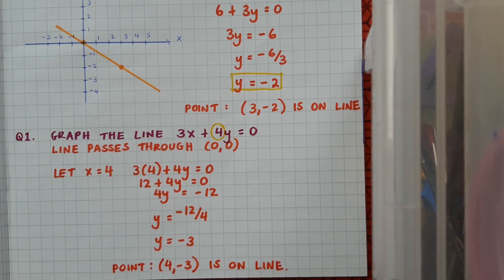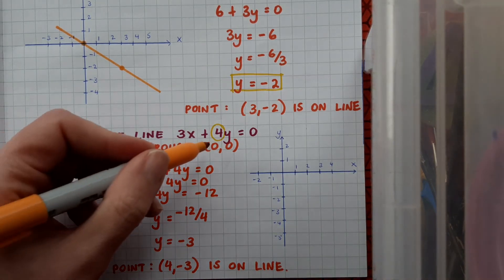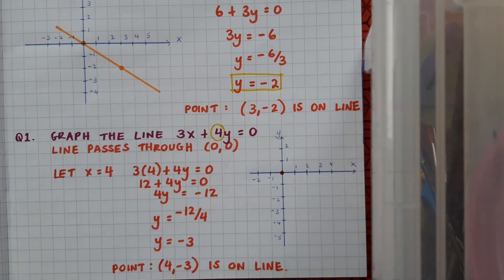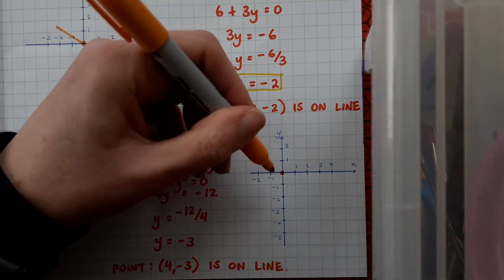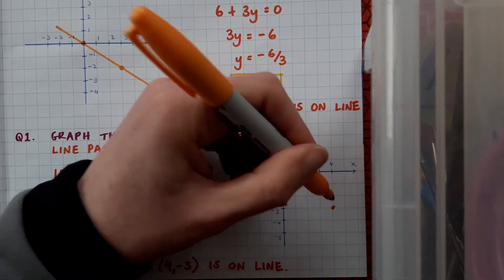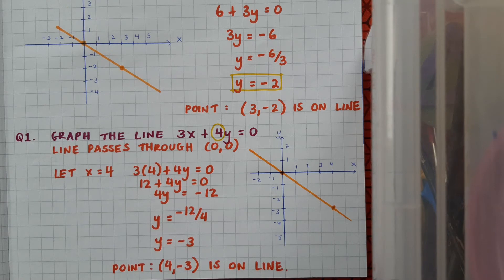Now I can go off and draw my xy plane and graph. I'll mark my points in: I've got the point (0, 0), and then the point (4, −3) — over to 4, down to minus 3. And then I'll draw a line through them to finish off the question. And there's my line.